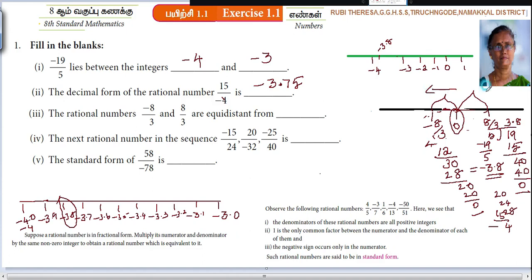Both are equidistanced from 0. Only the direction is changed. When it goes forward, this is plus 8 by 3. When it comes backward, then it comes minus 8 by 3. So the distance is same from 0. The distance is the same. But direction change, the symbols change. Do you follow?